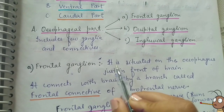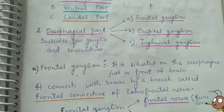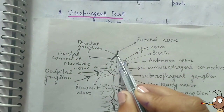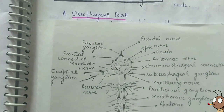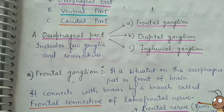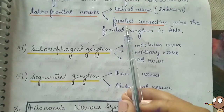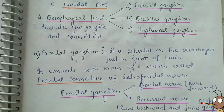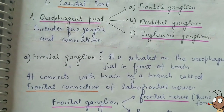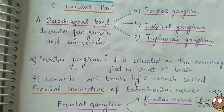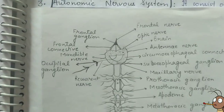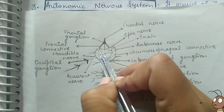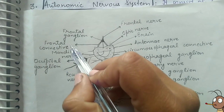The frontal ganglion is situated on the esophagus, just in front of the brain. Here we can see the frontal ganglion in the diagram, situated above the brain. It connects the brain by a branch called the frontal connective of the labrofrontal nerve. As seen in the diagram, the frontal ganglion connects with the brain through the frontal connective of the labrofrontal nerve.